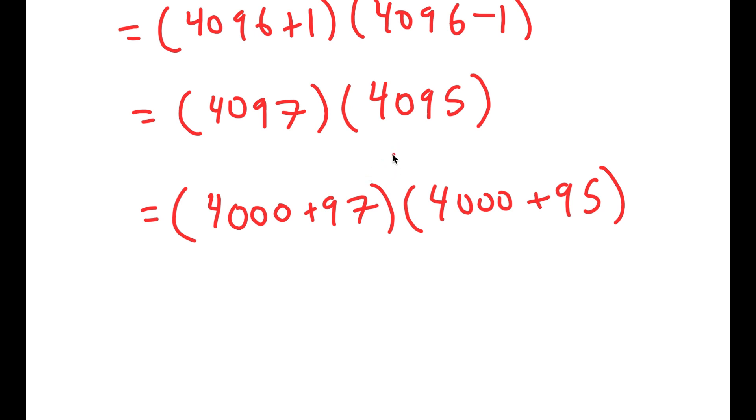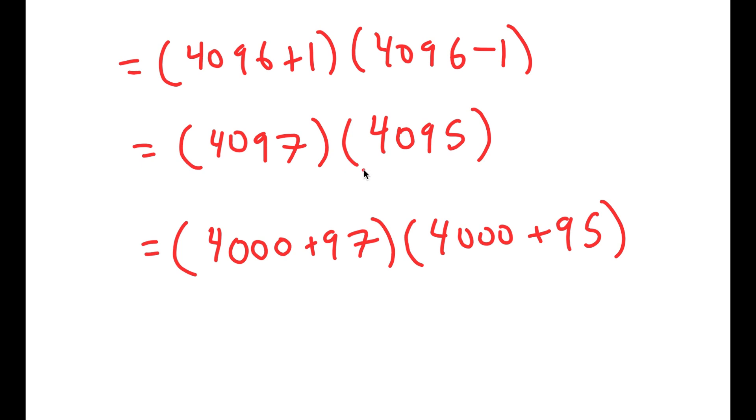I'm going to be solving this problem by distributing. Or, what I can also do, which is an easier method, is to rewrite 4,097 as 4,100 minus 3 times 4,100 minus 5. This is another way to rewrite this, this time subtraction instead of addition. But now, notice how we have 3 times 5, which is much easier to solve than 97 times 95.